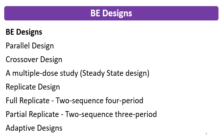In replicate design, there are two types: full replicate and partial replicate. Full replicate is a 2-sequence, 4-period design, and partial replicate is a 2-sequence, 3-period design. There are also adaptive designs.